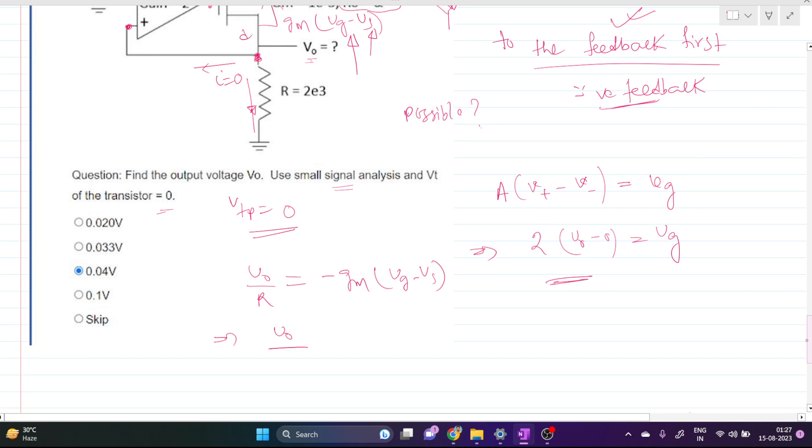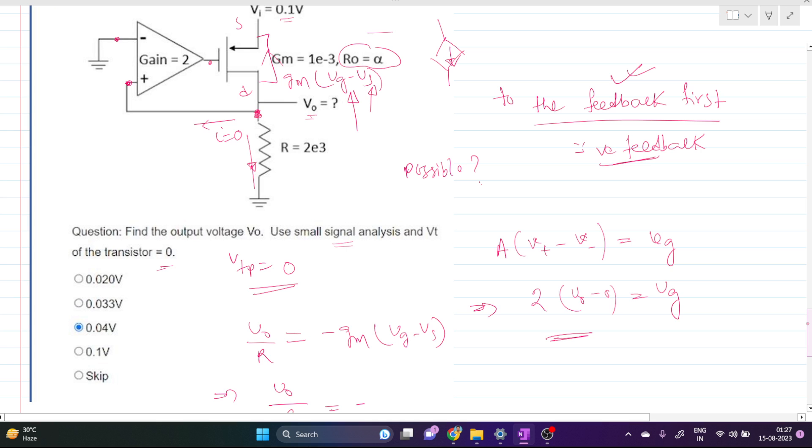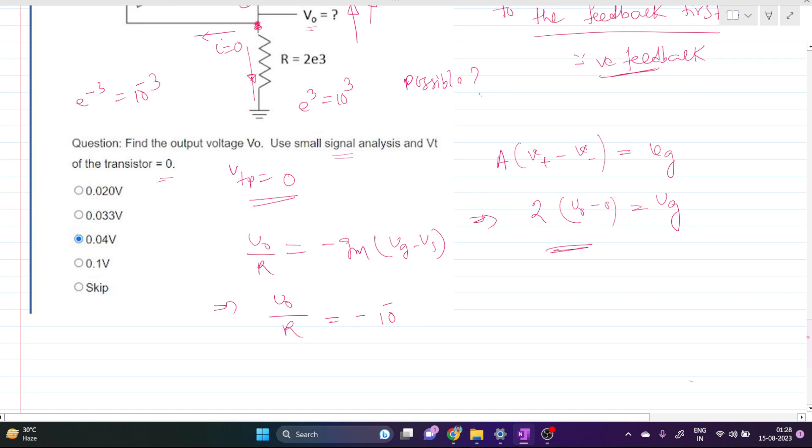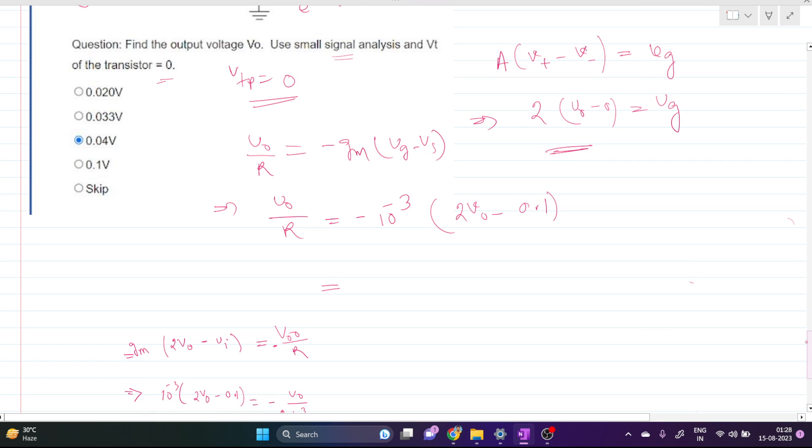Here V_out we have to find. The g_m value is 1e-3, which means 10^-3. Let's do it: g_m is 1e-3, and V_g is nothing but 2 V_out because this is 0, and our V_s is nothing but 0.1. Now this is simple algebra, and our R value is 2×10^3, so this cancels. We are having V_out equals 4 V_out minus 0.2, so our 5 V_out is...